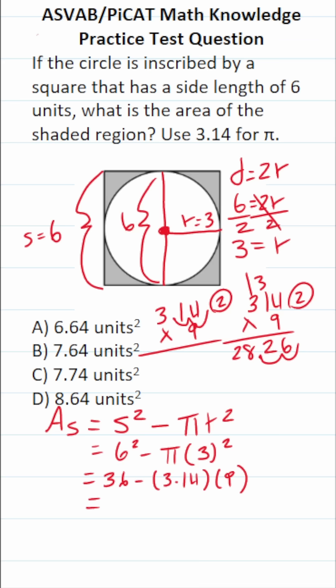9 times 3 is 27, plus 1 is 28. Bring in our two decimals, 1, 2. This becomes 36 minus 28.26.